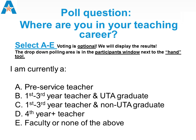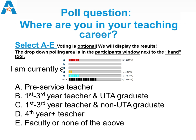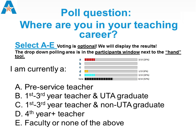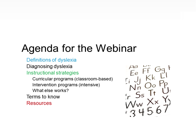Let's do a poll. Use the dropdown arrow next to the hand tool and vote: A) pre-service teacher, B) first through third year teacher and UTA graduate, C) first through third year teacher non-UTA graduate, D) fourth or more year teacher, or E) faculty or none of the above. We've got a mix — some pre-service teachers, faculty, and others. Here's our agenda.